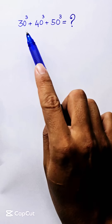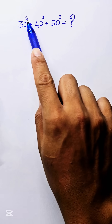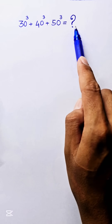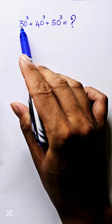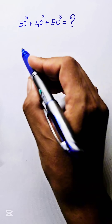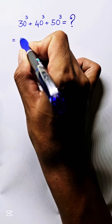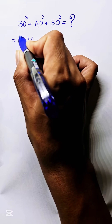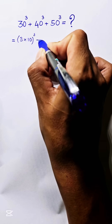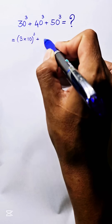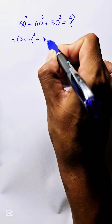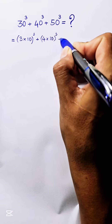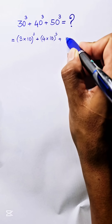Find the value of 30 power 3 plus 40 power 3 plus 50 power 3. We can write 30 power 3 as 3 times 10 all to power 3, and 40 power 3 can be written as 4 times 10 all to power 3, and 50 power 3 can be written as 5 times 10 all to power 3.